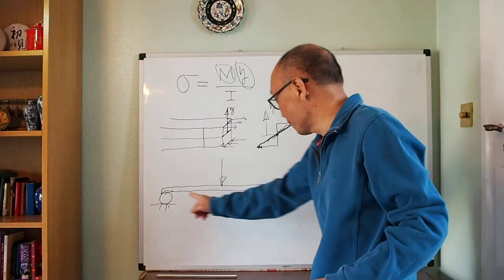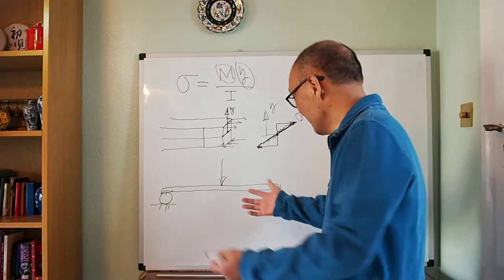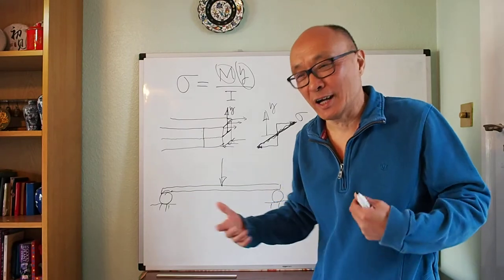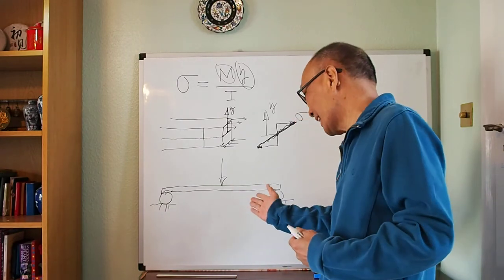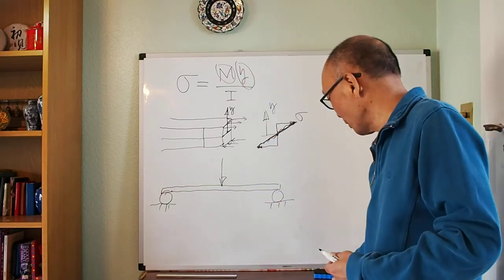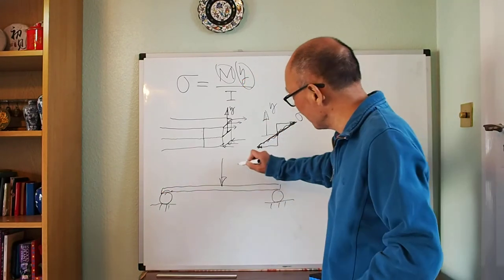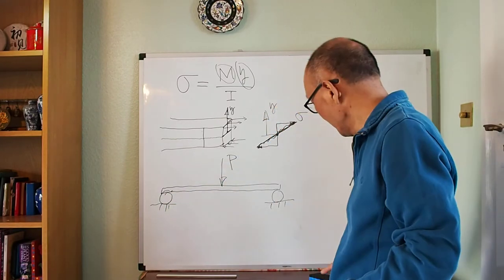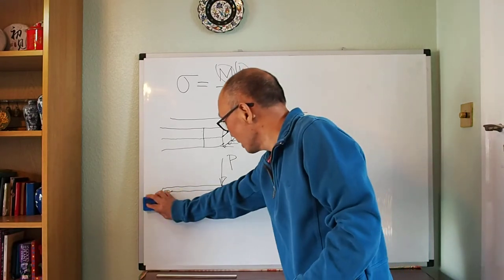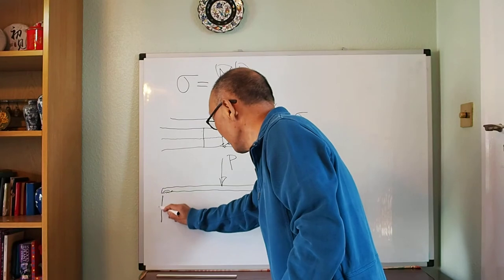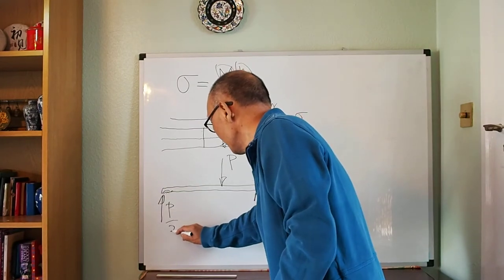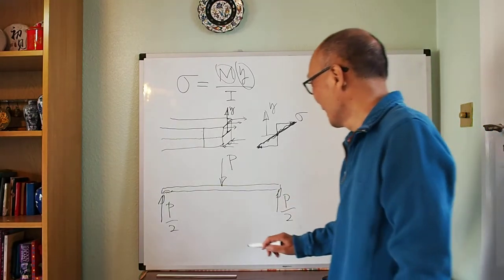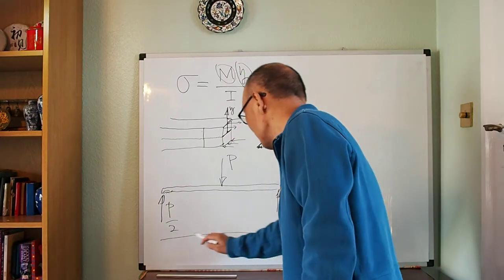Before I can calculate the bending moment, I need to know the reaction forces, because the bending moment is an internal force — an internal moment. To calculate that I have to first find the reaction forces. In this simple case with load P, the support force is simply shared equally by the two supports, so each reaction force is P over 2.